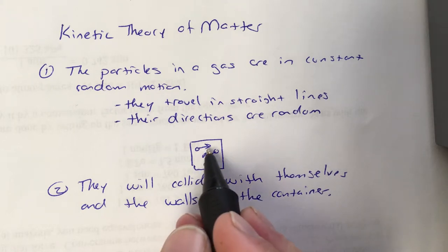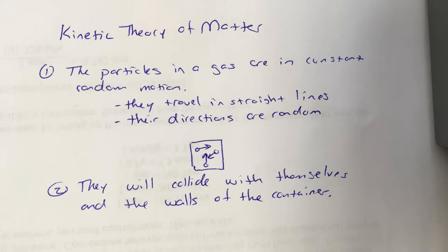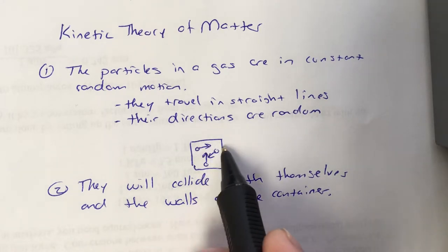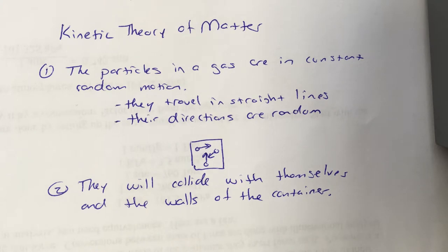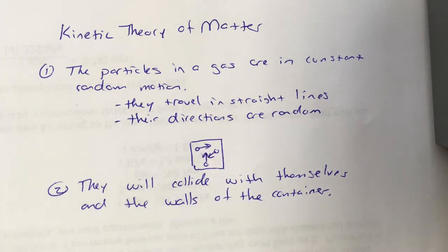So this little particle here is heading right towards that wall over there, and eventually it's going to hit it. These are inanimate objects. They don't think. They don't say, whoa, there's a wall coming, got to turn. They travel in straight lines. So since this particle here is heading towards the wall, it's eventually going to hit it. These two particles are kind of on a collision course with each other, and if they happen to run into each other, they run into each other.